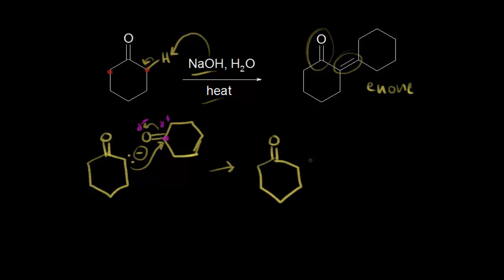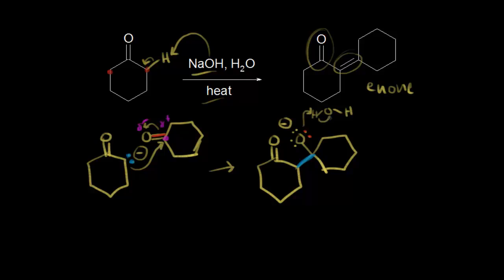We can show these electrons attacking right here, pushing those electrons off onto the oxygen. A bond forms — the all-important carbon-carbon bond — and this oxygen now has three lone pairs of electrons with a negative one formal charge as our alkoxide. We can then think about water protonating our alkoxide intermediate, with a lone pair picking up the proton, and we have our aldol intermediate.